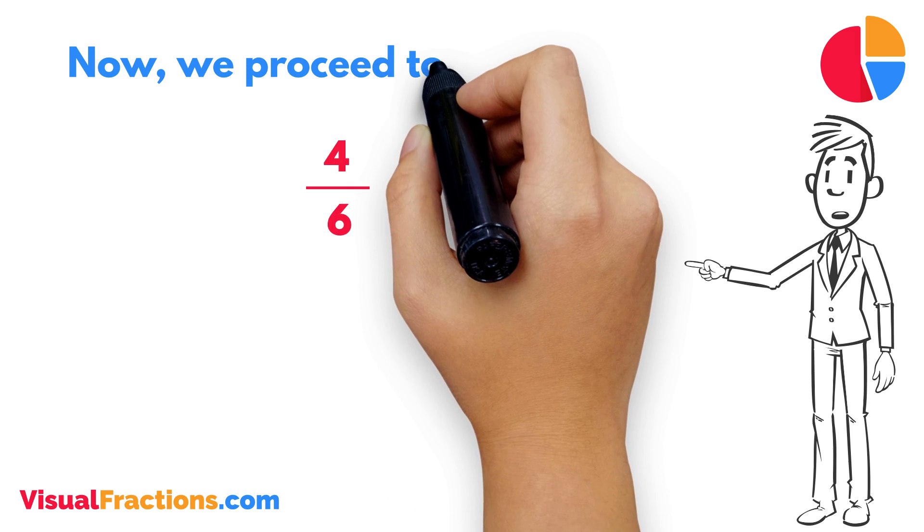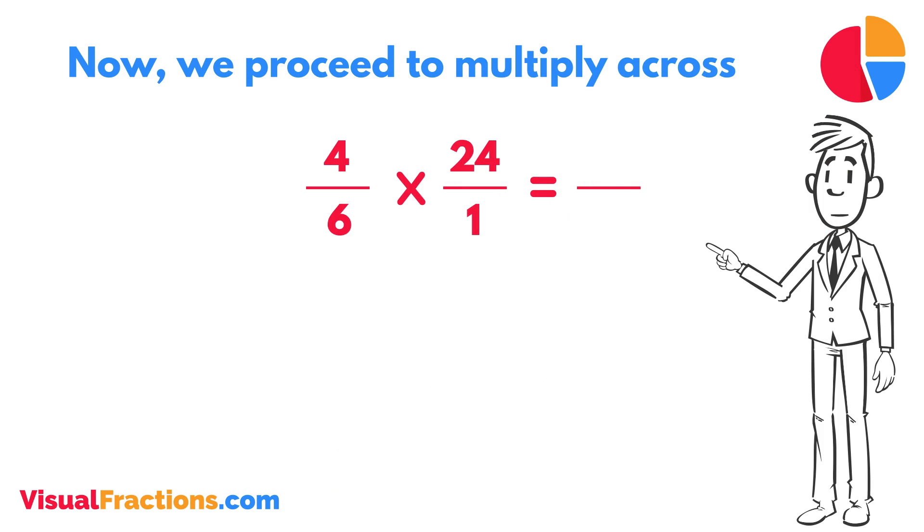Now, we proceed to multiply across. First, multiply the numerators: 4 times 24 equals 96.